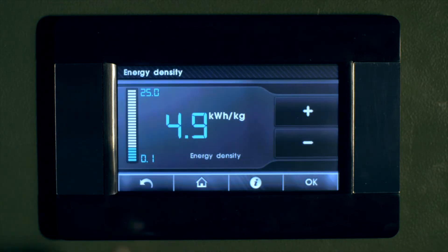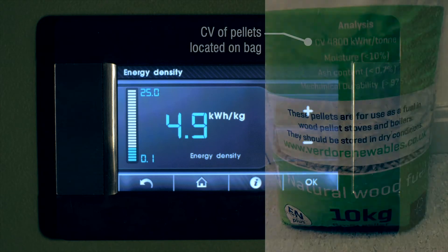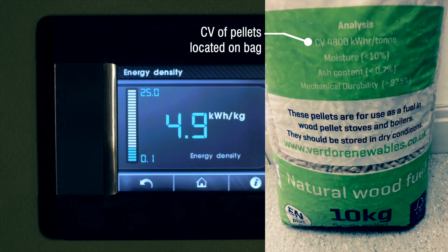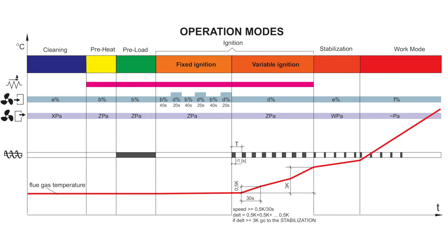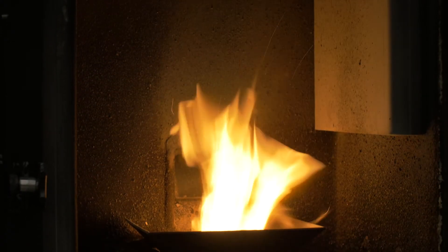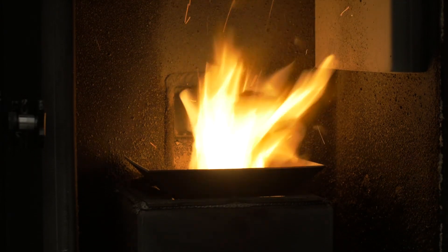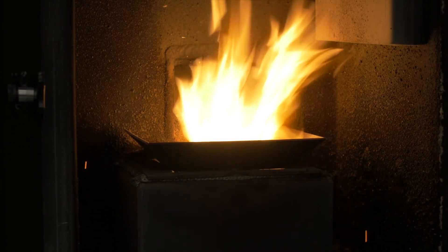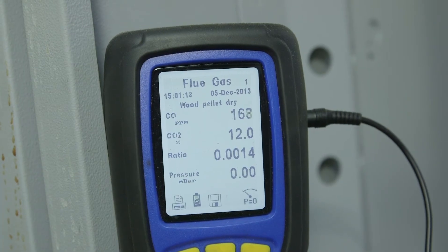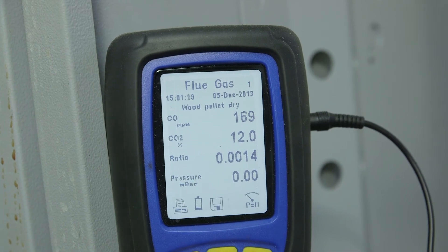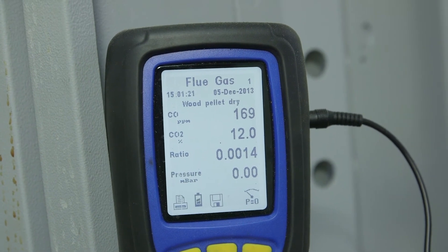You can also put the energy density or calorific value of fuel here if you want to deviate from factory settings. The iGen controller, using an advanced algorithm, then calculates the fuel rates for each stage of the boiler operation from 100% down to 30% power. This algorithm is often referred to as PID or fuzzy logic. It simplifies the commissioning process greatly and reduces the amounts of human intervention in the setting up of the boiler.